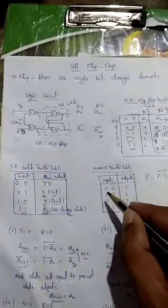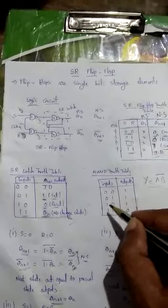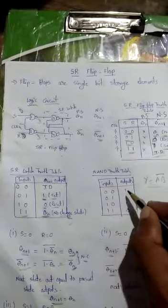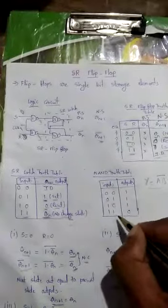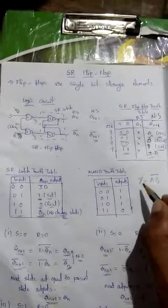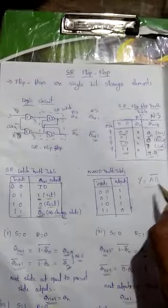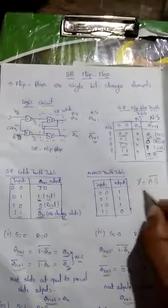Now we know the NAND gate truth table. When inputs are 0,0 or 0,1 or 1,0, the output is equal to 1. Only in the 1,1 condition do we get the output equal to 0. The NAND gate output expression formula is Y = AB̄ (A·B whole bar). Using this, we write down the NAND gate output.